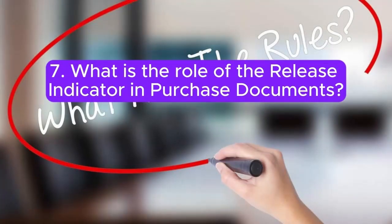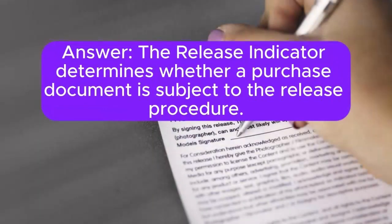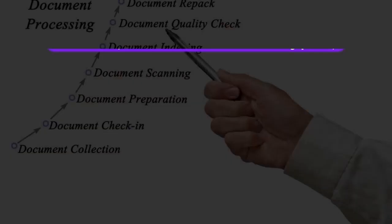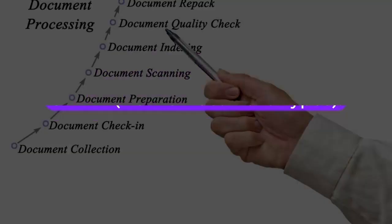Question 7: What is the role of the release indicator in purchase documents? Answer: The release indicator determines whether a purchase document is subject to the release procedure. It is set in the document type configuration in transaction code OMG4, defined document types.